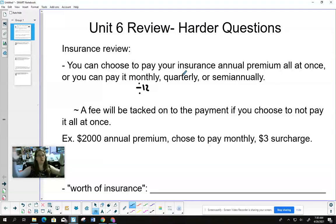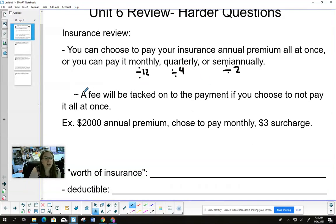How do we go from a year down to a month? Divide by 12. You can also choose to pay it quarterly - divide by 4, since there are four quarters in a year. And semi-annually, divide by 2. A fee will be tacked on to the payment if you choose not to pay it all at once.